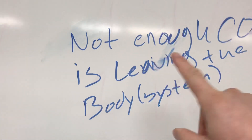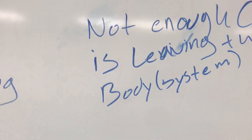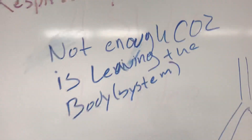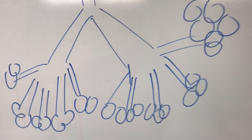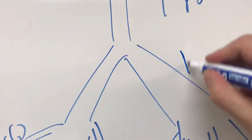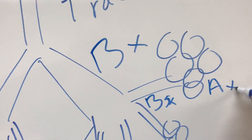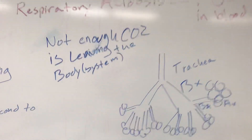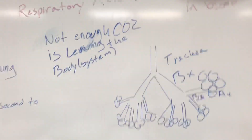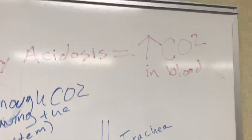So why is this happening? The buildup of CO2 is occurring because not enough CO2 is leaving the body — for some reason you can't breathe out enough CO2. Here's the anatomy: that's supposed to be a trachea, then bronchi, bronchioles, and alveoli — and that's where all the gas exchange occurs.